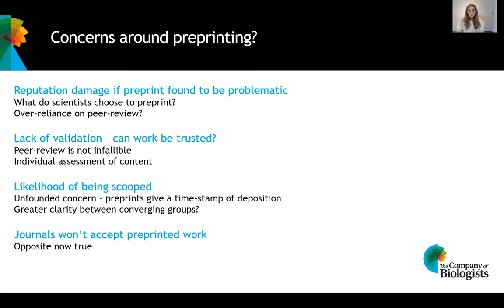Another concern is that preprinting work can lead to your work being scooped. There's some confusion around this, because preprints give a timestamp of deposition. If you upload your work to a preprint server, it gets a DOI with a timestamp — a recorded marker of when it was put online. Any subsequent work that converges on your findings has to cite that preprint, otherwise they risk plagiarism. So to a certain extent, preprints actually provide greater clarity around concerns about when converging groups arrive at the same results in the same field.